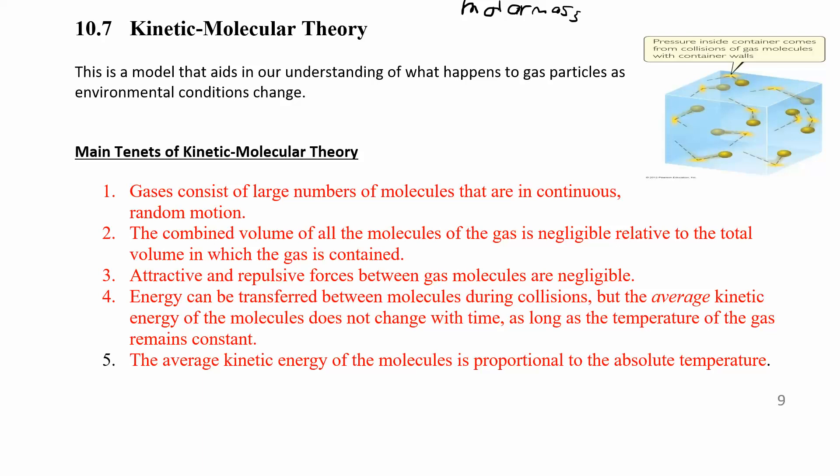The ideal gas equation explains how gases behave, but it doesn't really explain why the molecules are behaving the way they do. And so that's where the kinetic molecular theory comes in. There are five basic tenets of the kinetic molecular theory. The first one is that gases consist of a large number of molecules in continuous random motion. So you have a whole bunch of molecules and they're moving around a lot.